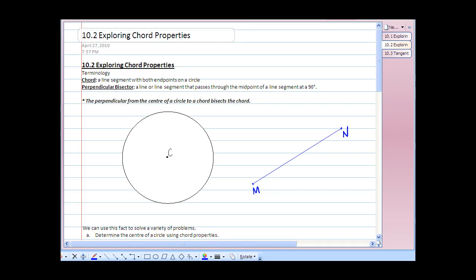Now we'll look at exploring chord properties. So let's just review. A chord is a line segment with both endpoints on the circle.